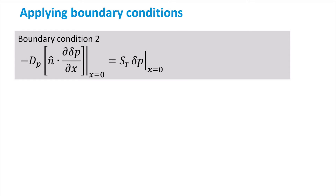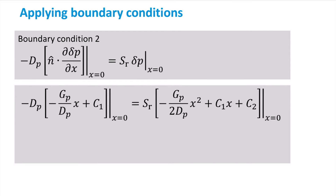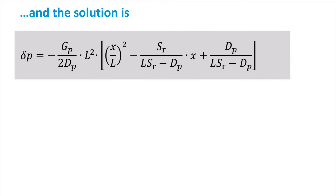This boundary condition gives us the first relationship between the integration constants c1 and c2. The second boundary condition is related to the surface recombination velocity. To apply this boundary condition, we take the first spatial derivative of the carrier concentration on the left-hand side and evaluate it for x equal to zero, which is at the surface. On the right-hand side, we evaluate the solution for the carrier concentration at x equal to zero and multiply it by the surface recombination velocity. Working this out, we obtain a simple relation between the constants c1 and c2. We now have two equations for these constants, and after some algebra find the solution for the hole concentration.